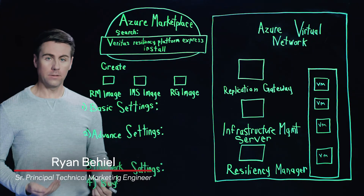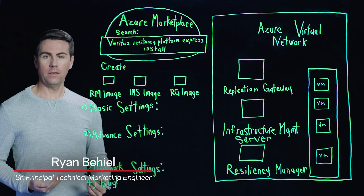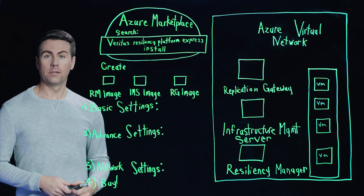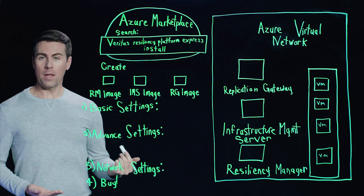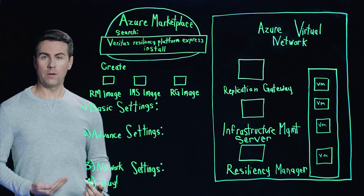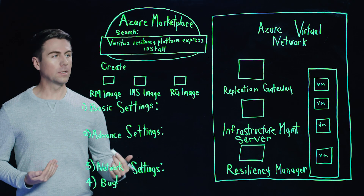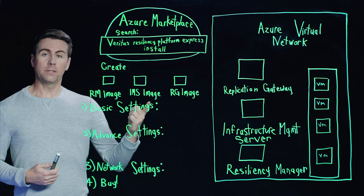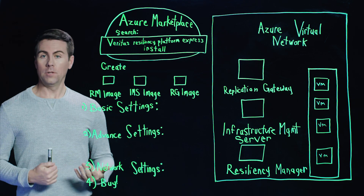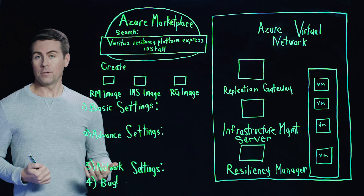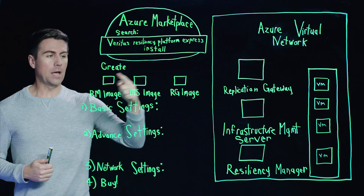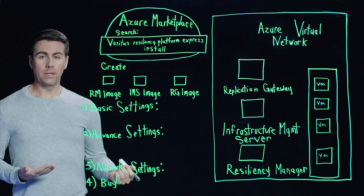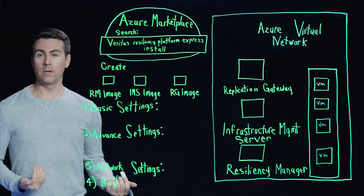Public cloud services have become an excellent target for businesses looking to maintain functionality in SLAs while reducing the cost and complexity of operating a duplicate data center. Veritas Resiliency Platform supports multiple public cloud services and offers a deployment option through the public cloud service marketplaces. One example is the Azure Marketplace, where Resiliency Platform is available as a solution template that allows an end user to quickly install all components as part of one single process — and can be up and running in minutes.